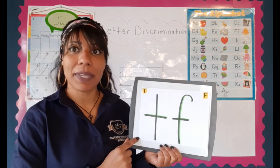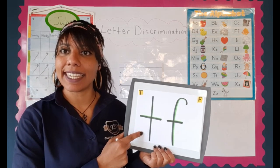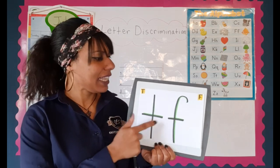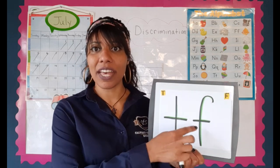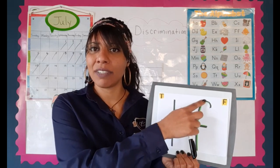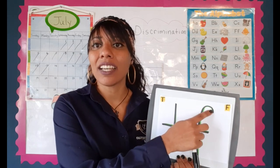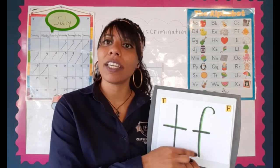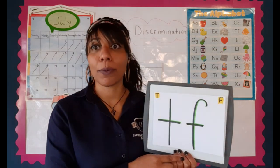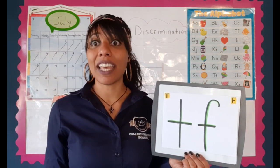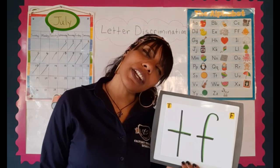The next letters we see are T and F. Say with me: T and F. We notice that T stands up tall. But with the F, he's kind of leaning over to the left — because F is getting tired and so he's falling, falling asleep. So I'm standing straight on the letter T, but falling asleep on the letter F.